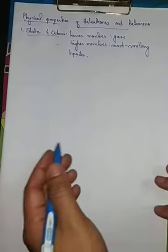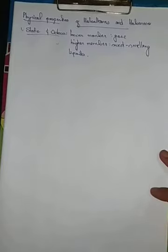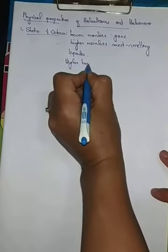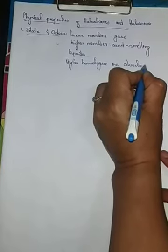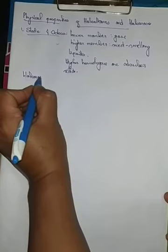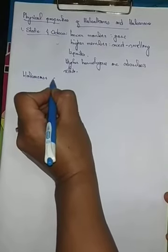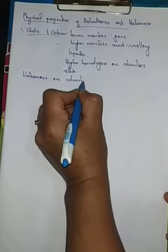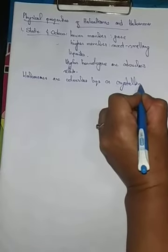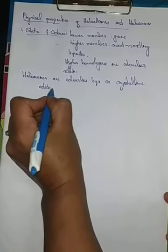If you study the higher homologues of haloalkanes and haloarenes, you will notice that they are odorless solids. Haloarenes are colorless liquids or crystalline solids.